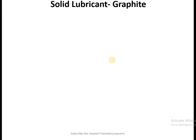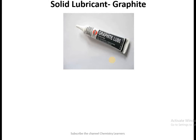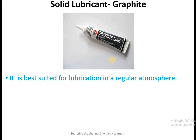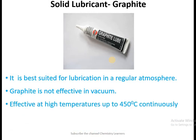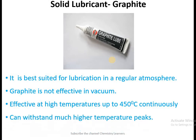For solid lubricants, we are going to take the example of graphite. Graphite is a black colored powder which is used as a solid lubricant and which can be mixed with greases. Graphite is used in a regular atmosphere, so it cannot be used in vacuum conditions. It is effective at temperatures up to 450 degrees Celsius and can withstand much higher temperature peaks as well.